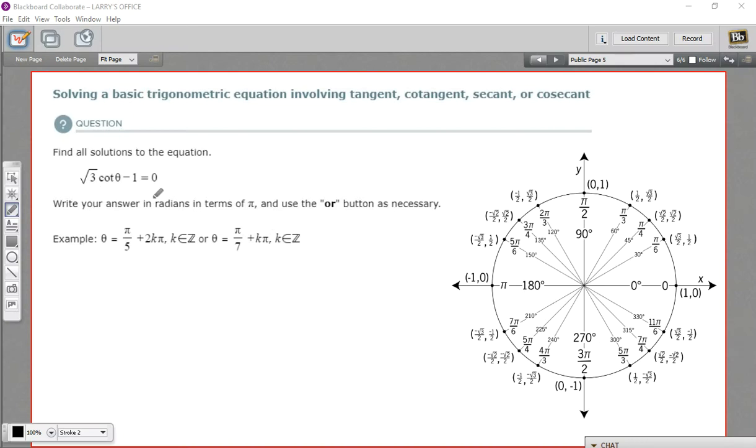In this problem, we need to solve a trigonometric equation. In this case, it's the square root of 3 times the cotangent of theta minus 1 equals 0.